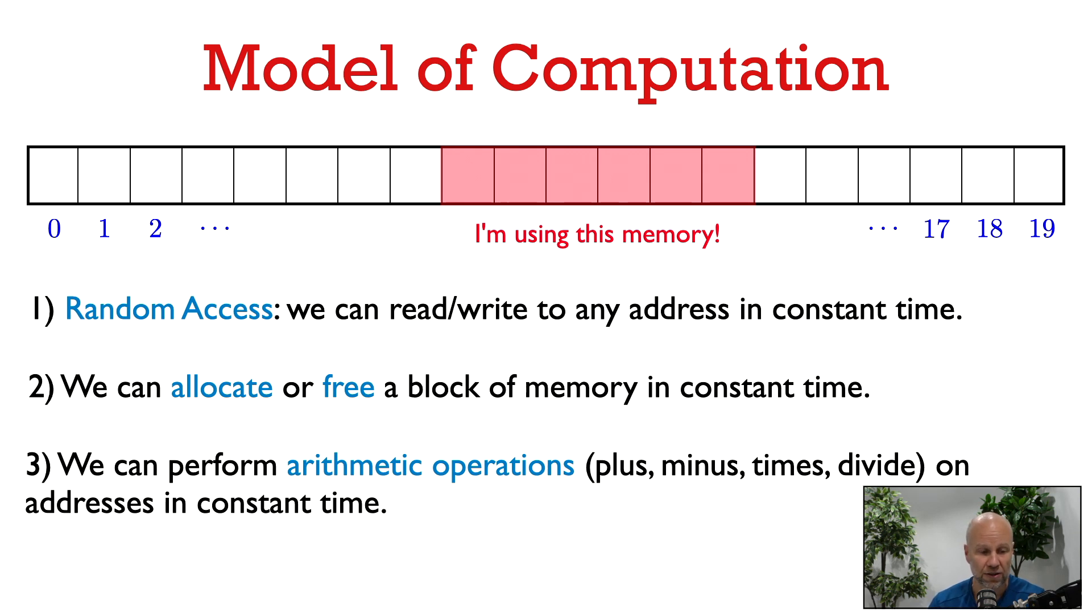Finally, we assume that we can do arithmetic operations on addresses in constant time. So for example, from a given address, we may want to add 10 to it to find the address of the 10th word after it. So we assume that this kind of operation we can do in constant time.